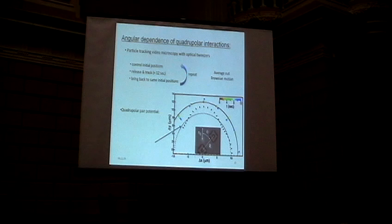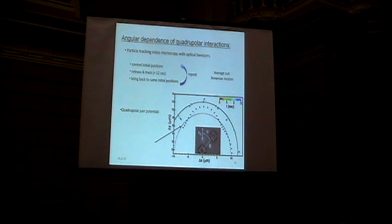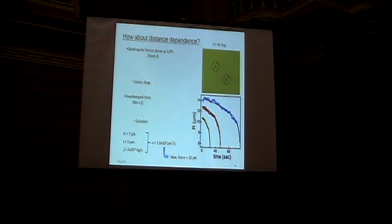And you can see at theta zero and theta 90, there's repulsion. And then you get strong attraction along theta minus 45 and plus 45, and then this tangential component to the force at intermediate angles. And this actually agrees very well with what you expect for quadrupoles, which is interesting.